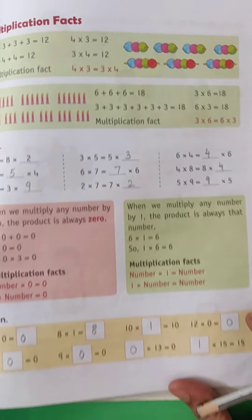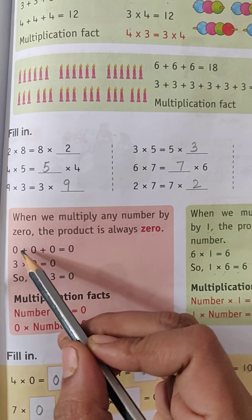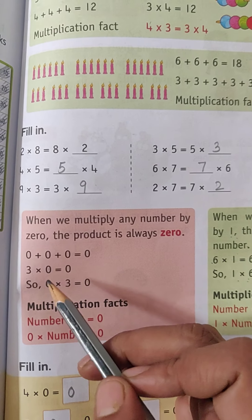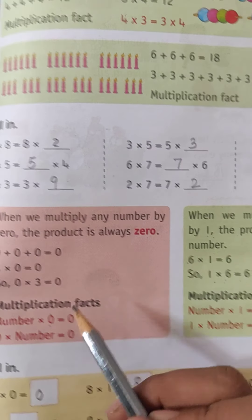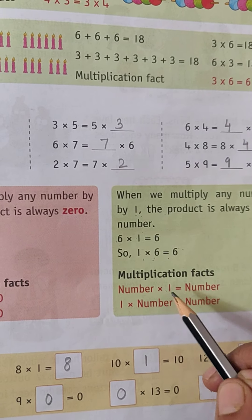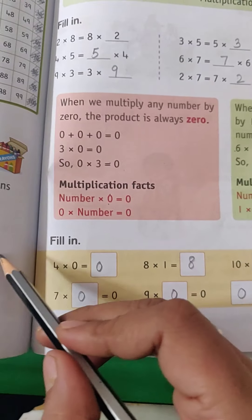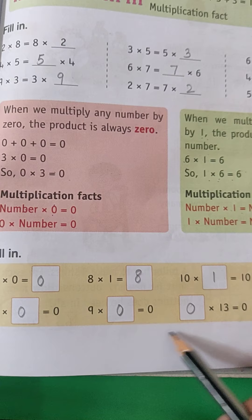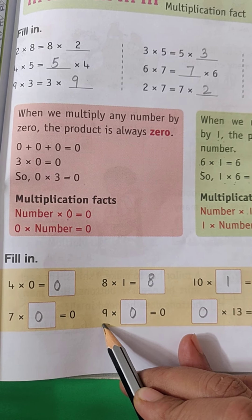Next thing is your simple mental maths questions. When you multiply the number by zero, the answer always comes zero. Here the facts are written. And when you multiply the number with one, the same number comes. So you have to understand them - you cannot cram these questions. You have to understand them. Sometimes this box will be given, so you have to just think logically.